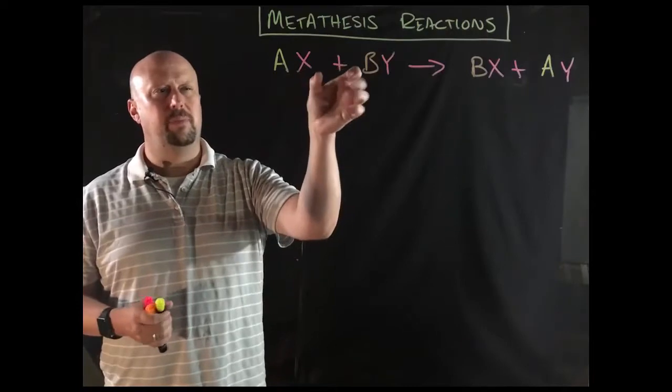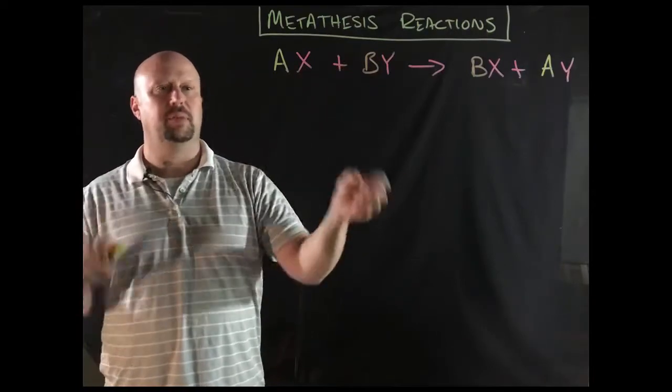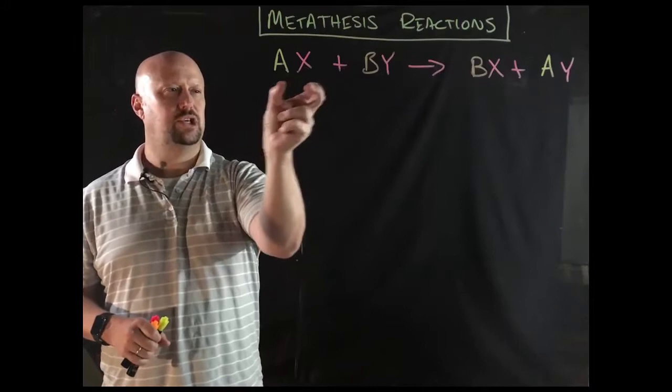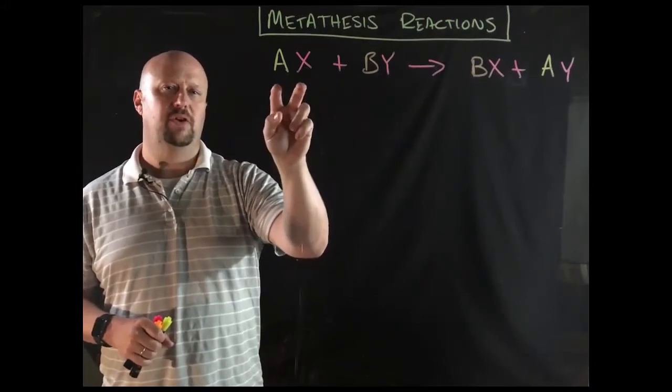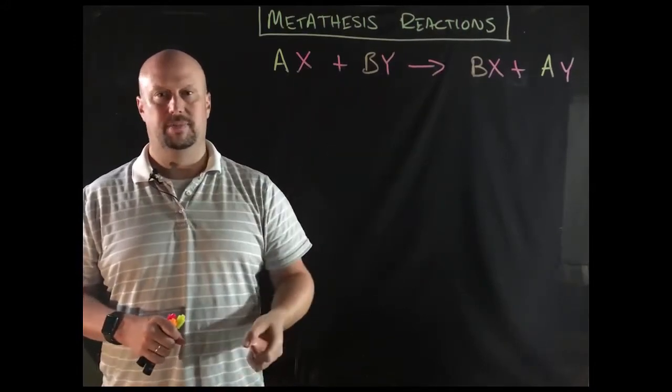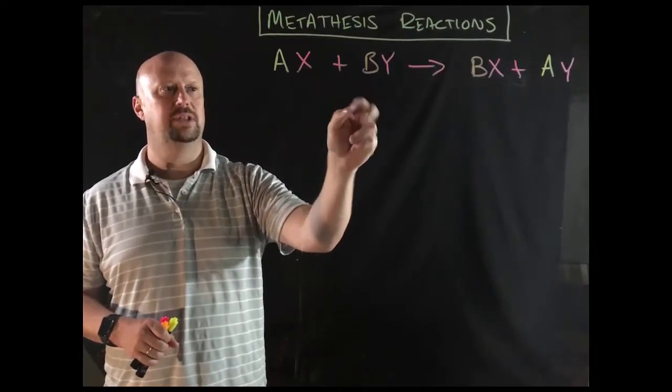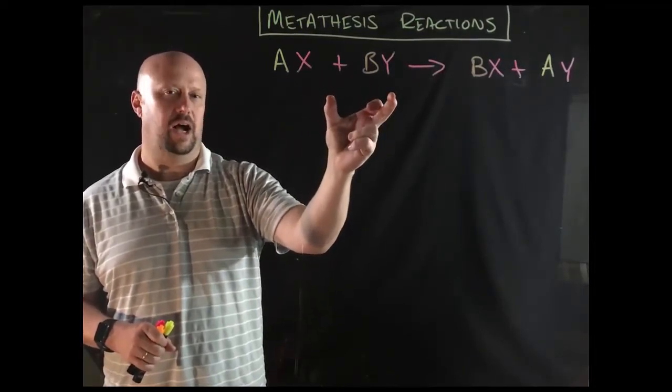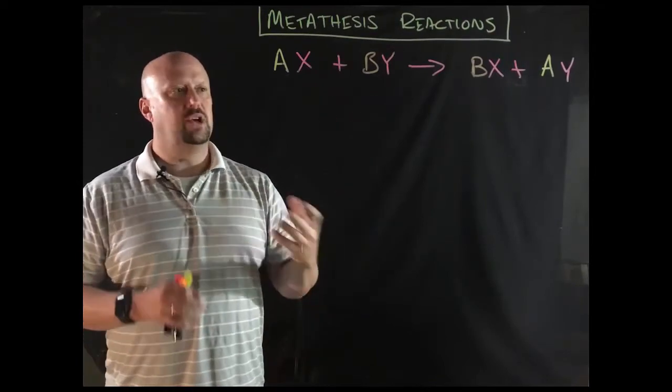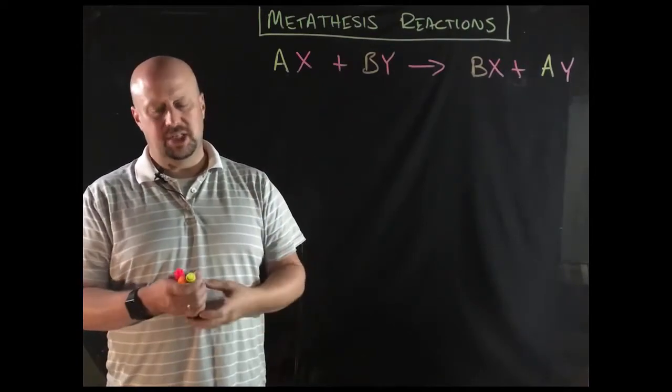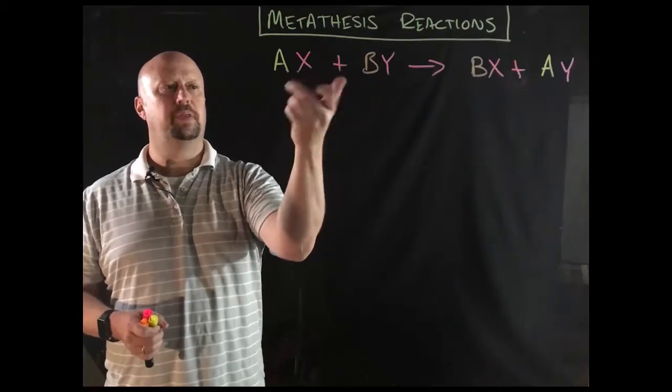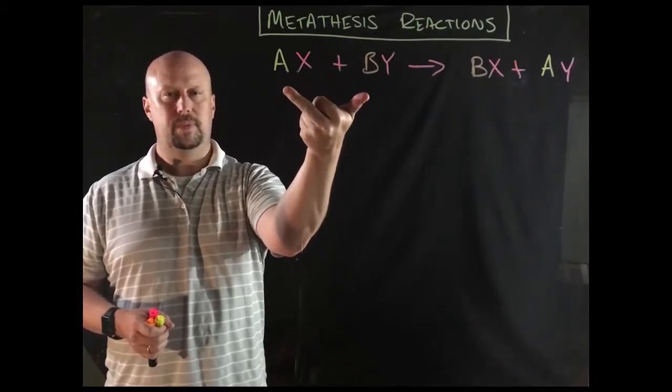What that will do for us is that if these things completely dissociate, then when we combine them, or even really before we combine them, but when we combine them, what we actually have are not two compounds, but rather four ions. Two positive ions and two negative ions.